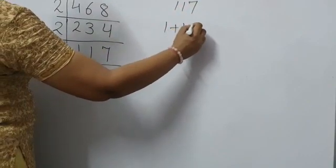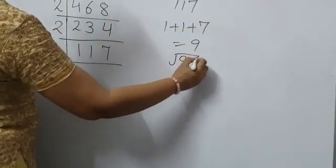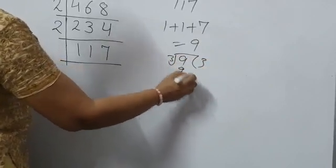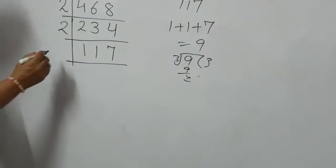For 117, 1 plus 1 plus 7 is 9. 9 is fully divisible by 3, which means 117 is also divisible by 3.